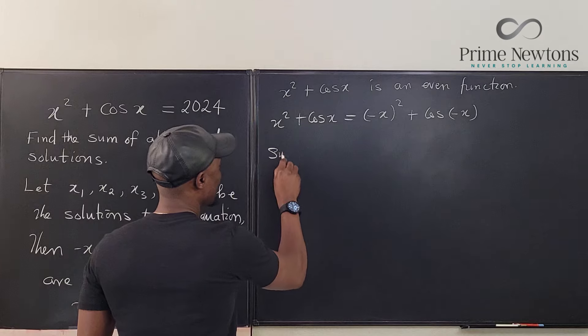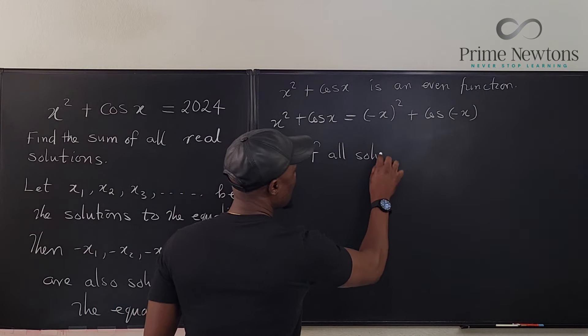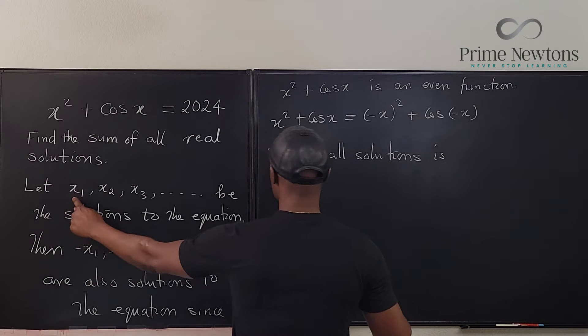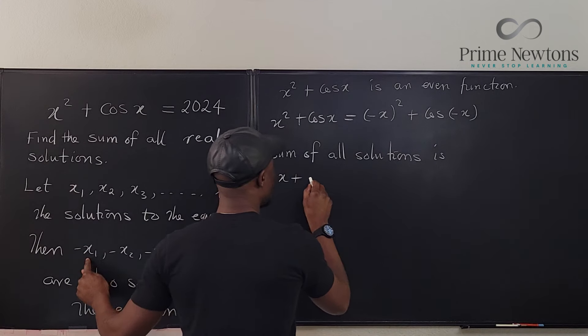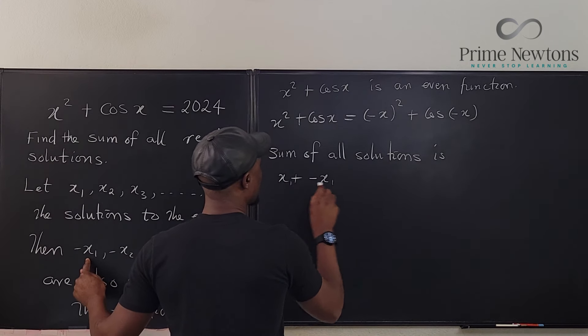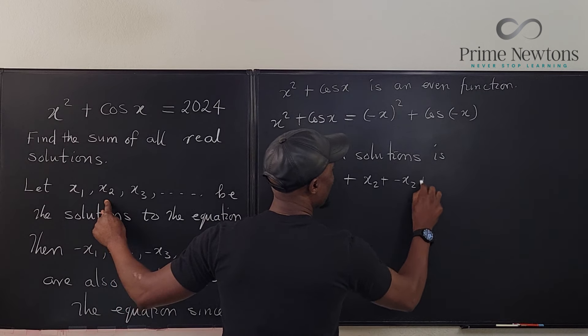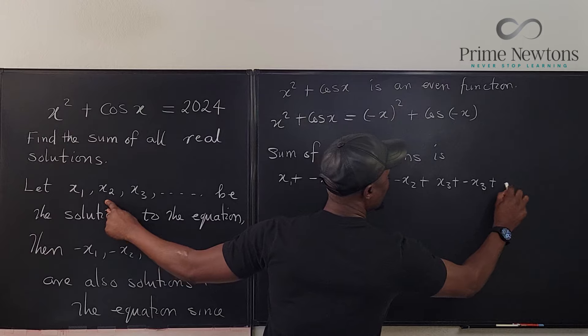if we add up all of the solutions to this equation, this is what we're going to get. So sum of all solutions is, we're going to start from the first solution, x1 plus minus x1 plus x2, you see that, plus minus x2 plus x3 plus minus x3, and so on.